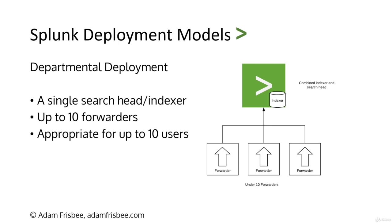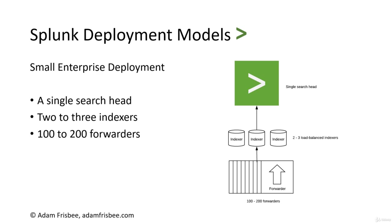The next deployment is a small enterprise deployment. Here you'll notice we split out the search head and the indexer and add a couple more indexers, because we're adding a lot more forwarders. We're expecting 100 to 200 systems forwarding data, so we're going to have two to three indexers, and we can still have a single search head.